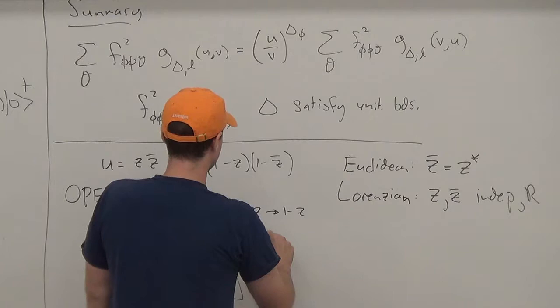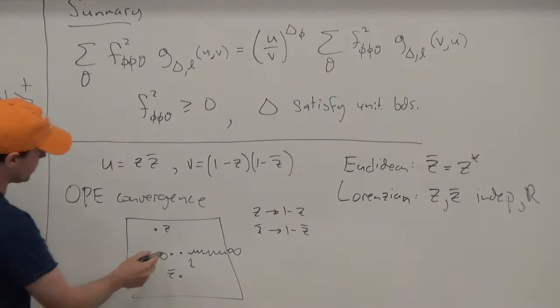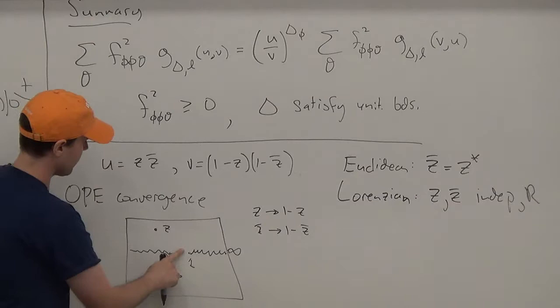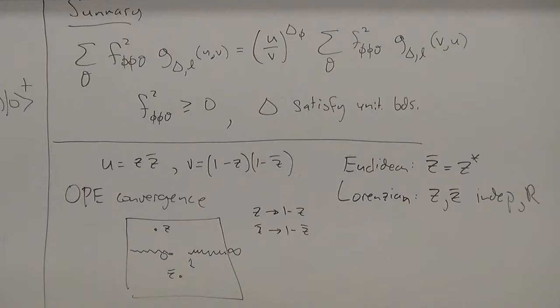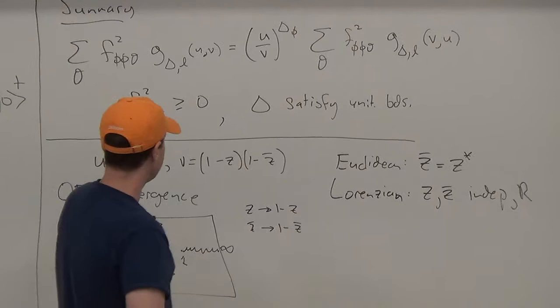What is the regime of convergence? It turns out the OPE converges in a pretty big regime. In the complex plane, with a cut from 1 to infinity, the OPE in the left-hand-side channel converges when z and z-bar are independently anywhere in this plane, as long as they're not on the cut. In particular, that includes the Euclidean regime as long as z and z-bar aren't both real and bigger than one, and it includes some large Lorentzian regime. The regimes of convergence of the left-hand side and the right-hand side overlap in a very large open neighborhood.